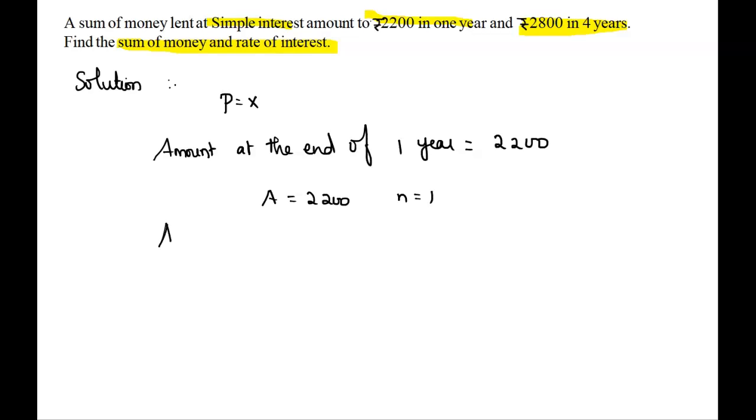Another point given is the amount at the end of 4 years equals 2800. So here, A equals 2800 when n equals 4.